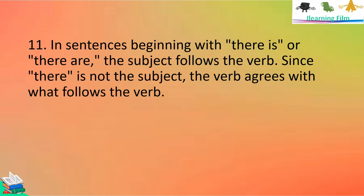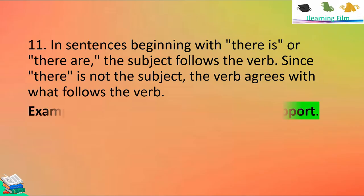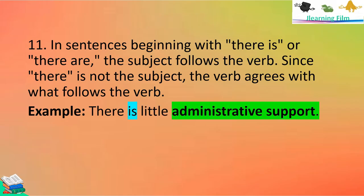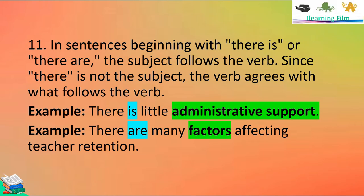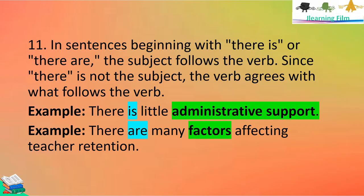Rule number eleven: in sentences beginning with 'there is' or 'there are,' the subject follows the verb. Since 'there' is not the subject, the verb agrees with what follows the verb. For example, 'There is no administrative support.' The noun — administrative support — is singular, so it takes the singular verb is. Another example: 'There are many factors affecting teacher retention.' The noun is factors, which is plural, so it takes the plural verb are.